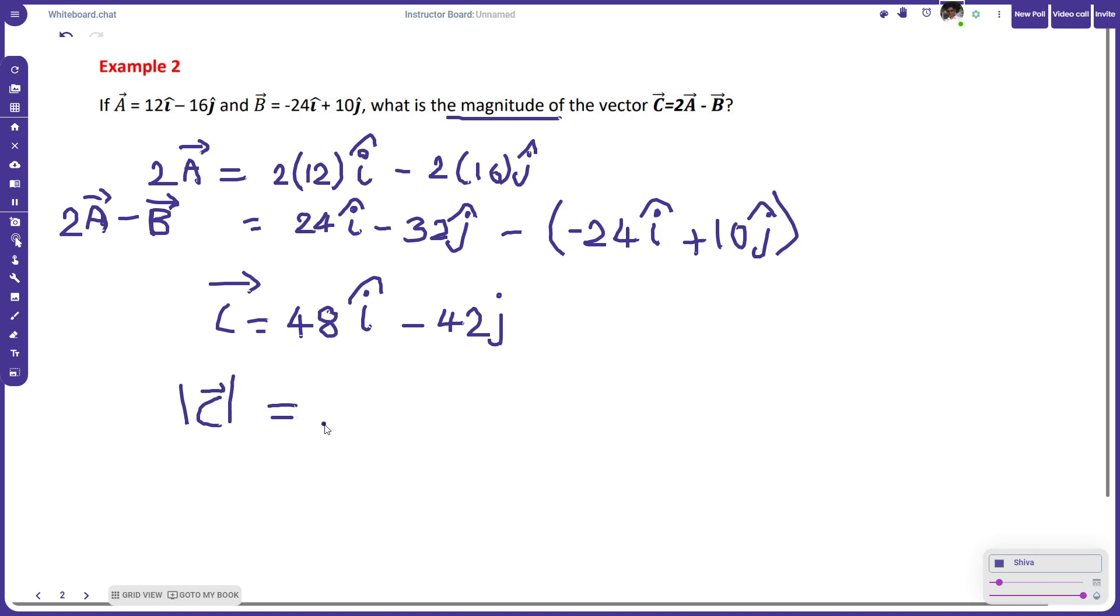it is just equal to the square root of these two components: 48 squared plus (-42) squared, and everything is under the root. If you simplify this you get the answer. I am giving this simplification